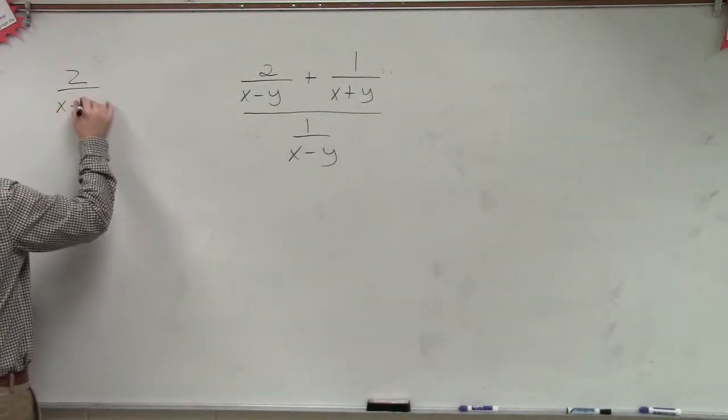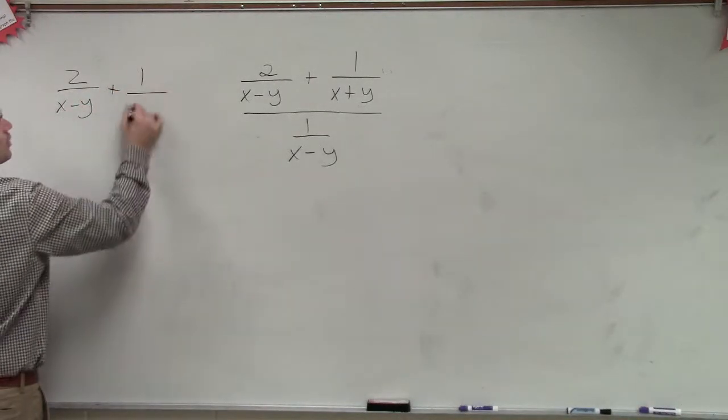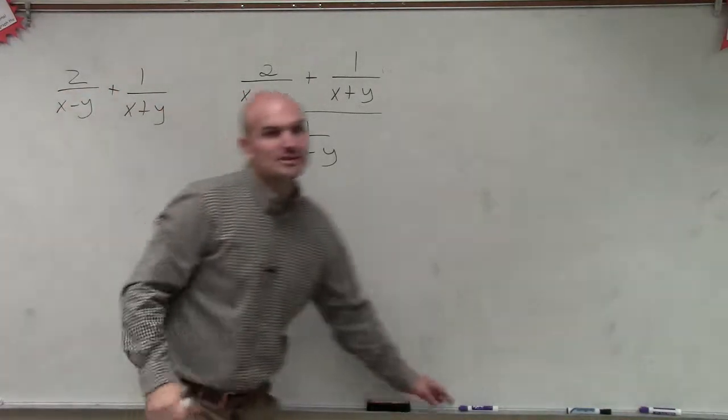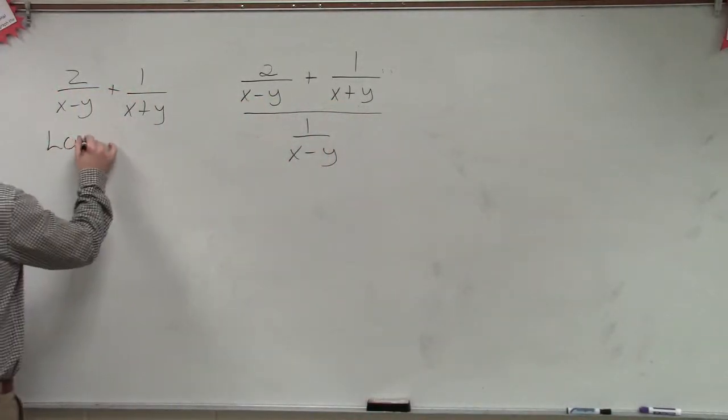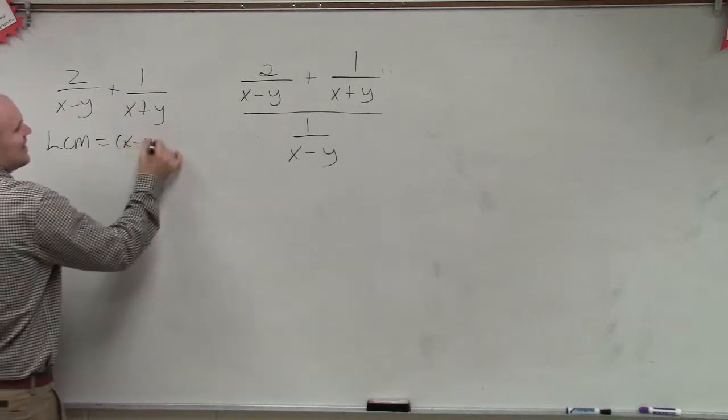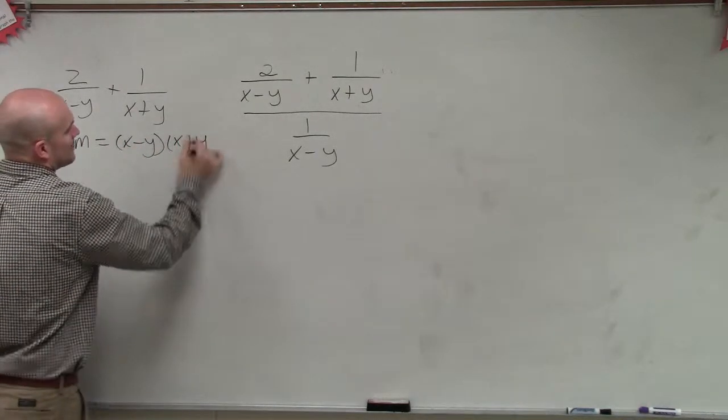So if I had 2 over x minus y plus 1 over x plus y, if I need to get them to be the common denominator, I would know that my LCM would have to equal x minus y times x plus y, right?